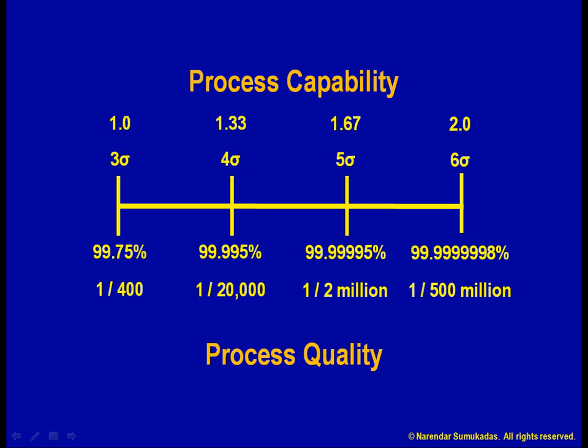This model is Three Sigma capable and produces 99.75% good output. Throwing out one defective cup out of 400 doesn't sound too bad, does it? Then why is there all this fuss about Six Sigma processes? Is it just a fancy buzzword? Why would a company seek such extreme quality levels? Wouldn't it be prohibitively expensive?